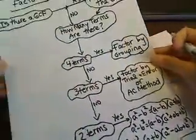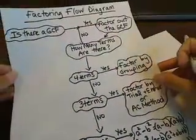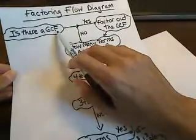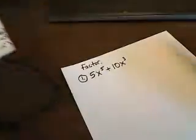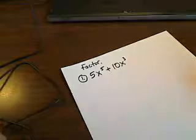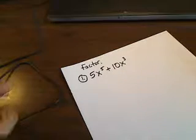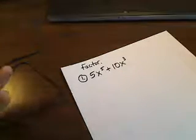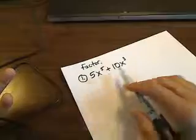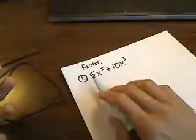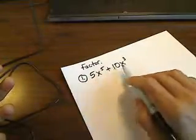Remember, the first thing we're always looking for when factoring — here's our factoring flow diagram again. The first question we ask is: is there a greatest common factor? A greatest common factor is basically the largest thing, the largest factor, that either of these terms will share in common.